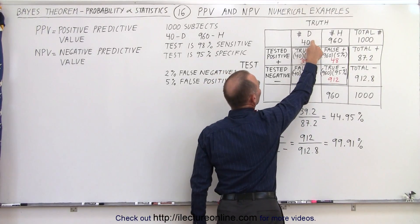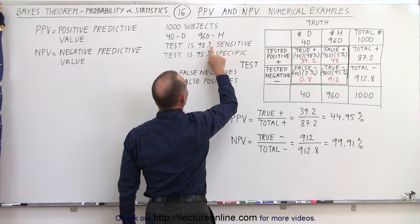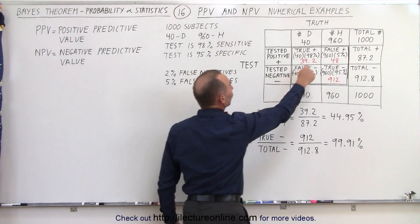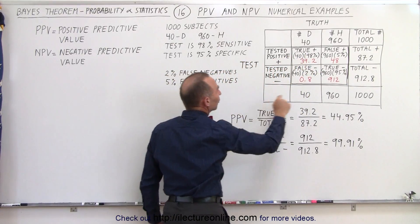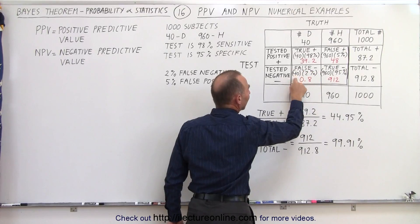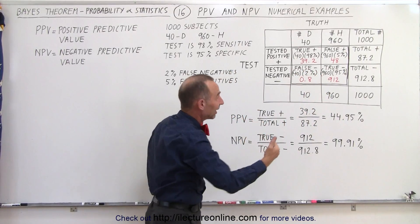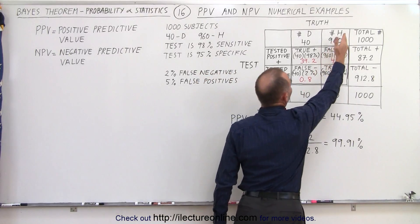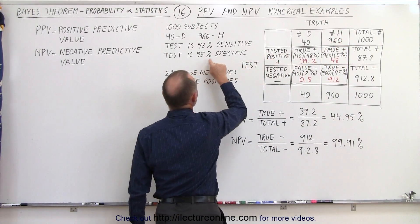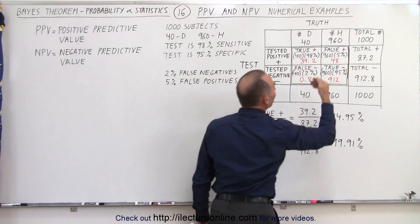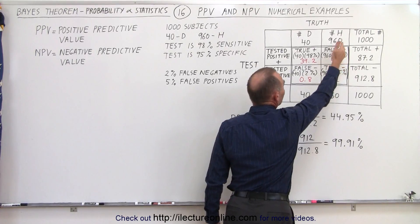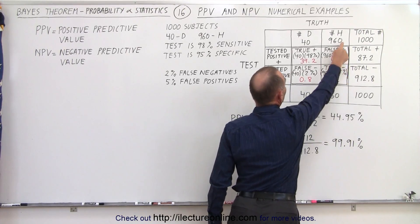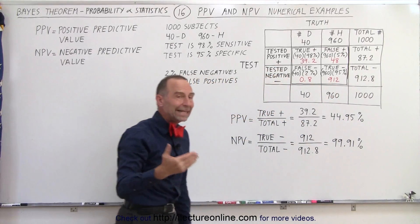There are 40 that have the disease, and since the test is 98% sensitive, 98% of them will be caught and flagged as positive. 98% of 40 is 39.2. 2% will be false negatives — 0.8 will test negative even though they are actually positive. Together they add up to the 40 we started with. We have 960 free from the condition, but the test is only 95% specific, so 5% will test positive even though they're negative — that's 48 false positives. 95% of those healthy will test negative, giving 912 true negatives.